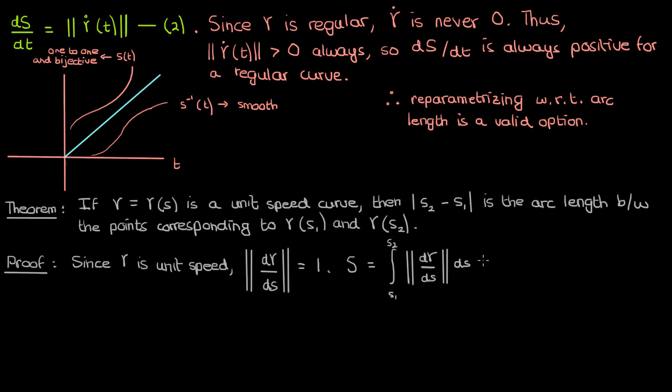but since the magnitude of the first derivative is just 1, this integral comes out to s₂ - s₁. And since this is the arc length we're talking about, which isn't allowed to be negative, we can just put in an absolute value in case s₂ might be less than s₁. Note that in this series of videos, I'm using a single bar for absolute value and a double bar for vector magnitude. So this completes the proof of this theorem.